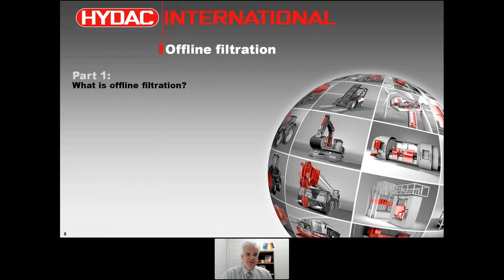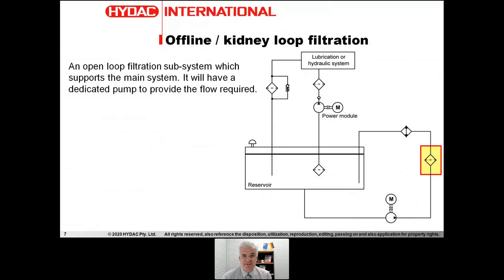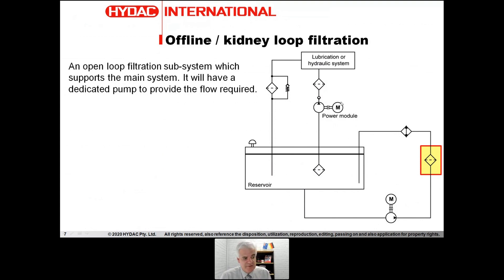So we're up to offline filtration — let me define what that is. Offline filtration is sometimes known as kidney loop filtration. It is an open loop filtration subsystem which supports the main system. It will have a dedicated pump to provide the flow required. So on a schematic system like this, we've got the main system over here and the offline filtration is its own little loop which we include filtration in. The offline pump could be mounted as a through drive in the main pump, but the sub circuit is still separate from the main system. The thing that defines an offline filtration system is it will have its own pump, not related to the main system.